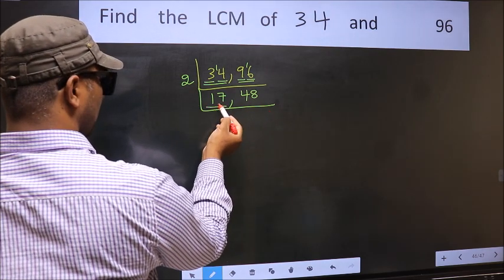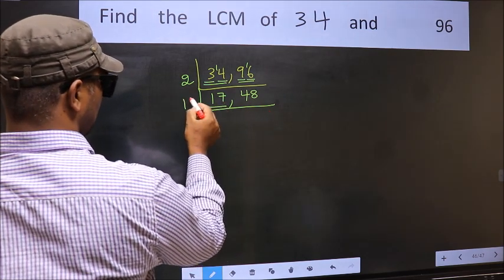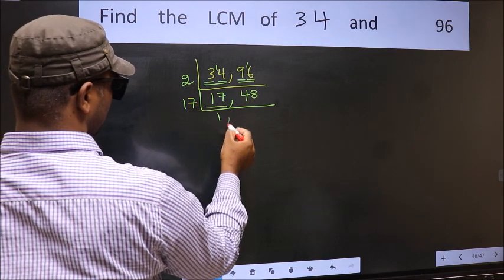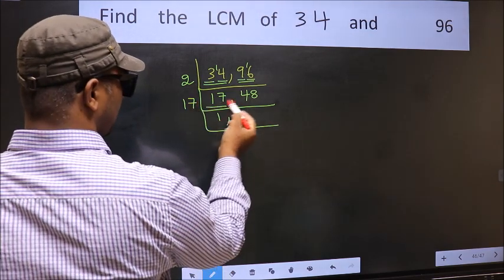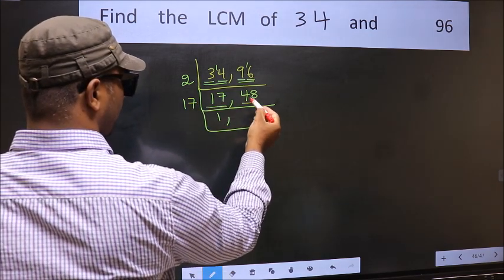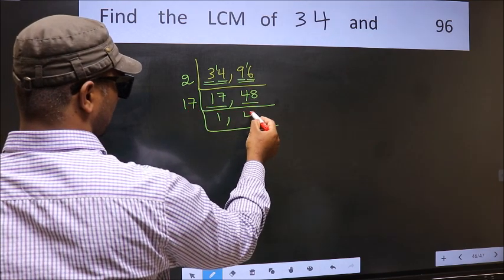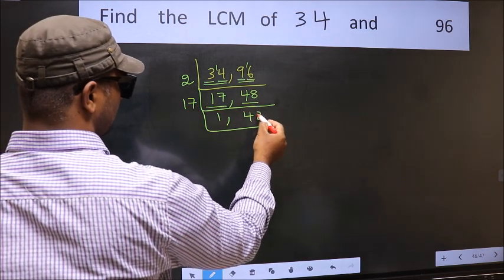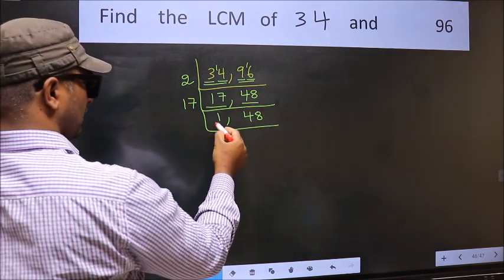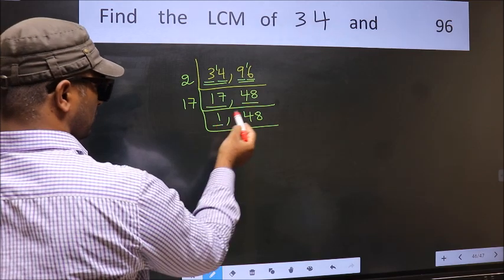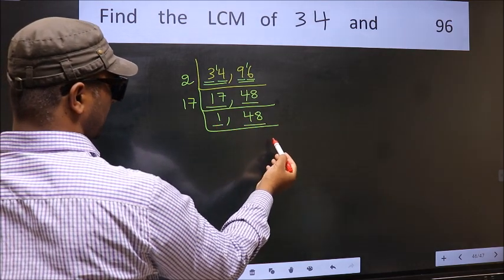Now here we have 17. 17 is a prime number, so 17 once is 17. The other number, 48, is not divisible by 17, so we write it down as it is. Now we got 1 here, so focus on the other number, 48.